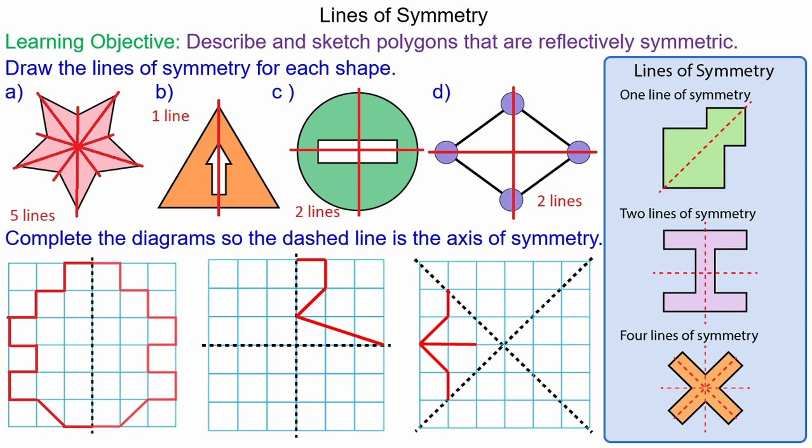For the second question we're going to perform a vertical and a horizontal reflection. And again each vertex is the same distance from the axis of symmetry.